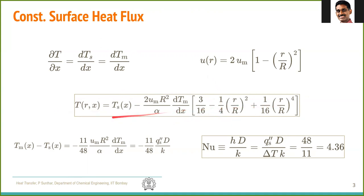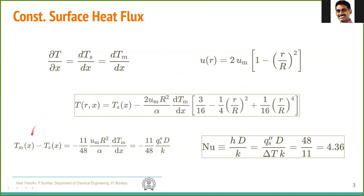Once we have the temperature profile, we can find all relevant quantities. For example, integrating the temperature weighted by u and r over the cross-sectional area gives the mean (bulk) temperature. The mean temperature minus the surface temperature turns out to be −(11/48)·q″·d/k, or equivalently in another form.